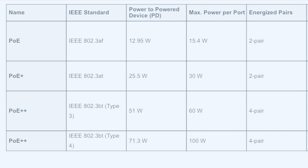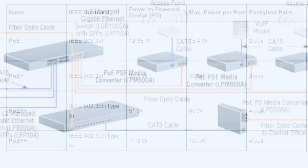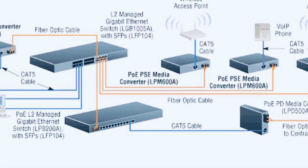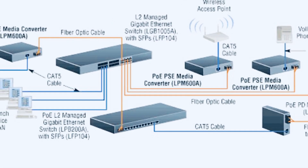PoE Plus is also good for alarm systems and heavy video data applications. Then we have PoE Plus Plus — IEEE 802.3bt — with Type 3 and Type 4. Type 3 delivers a minimum of 51 watts and a maximum of 60 watts using four pairs of cable, suitable for video conferencing equipment, multi-radio wireless access points, and telecommunication antennas — not just standard office access points.